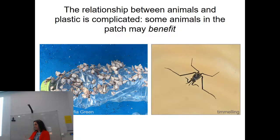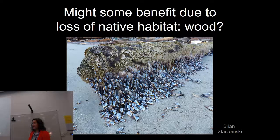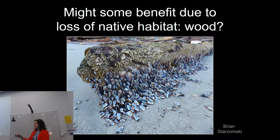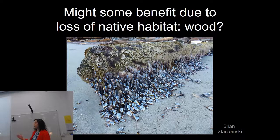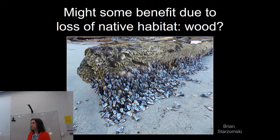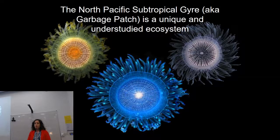The Great Pacific Garbage Patch has been impacted by humans even before plastic. I suspect part of it has to do with the fact that there was probably a lot more wood reaching the North Pacific subtropical gyre before widespread logging and damming of rivers. There are species that only live on sandals — there's a barnacle you find specifically on sandals, but sandals haven't been in the ocean that long. What were they living on before? We've lost a lot of the natural habitat that might have been entering this region.